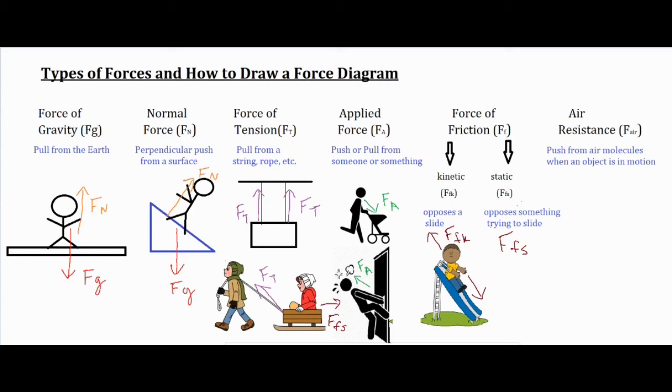Our very last one is air resistance. Air resistance would be a push from air molecules when an object is in motion. Technically anything that's moving around the earth is experiencing air resistance—even you walking down the hallway. You are colliding with the air molecules, and anytime you collide with something it's going to push back against you. The faster you move, the greater air resistance you're going to get.